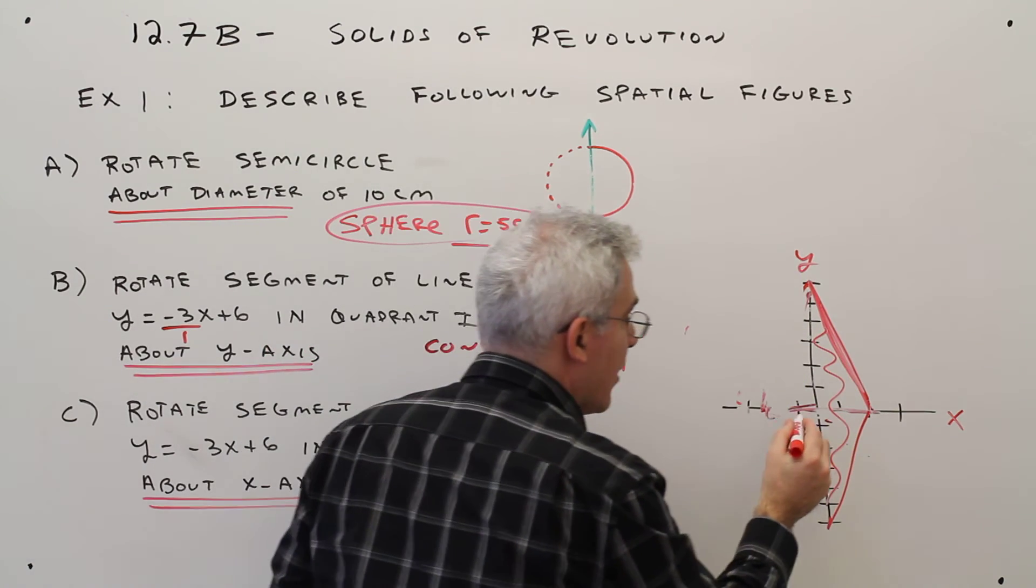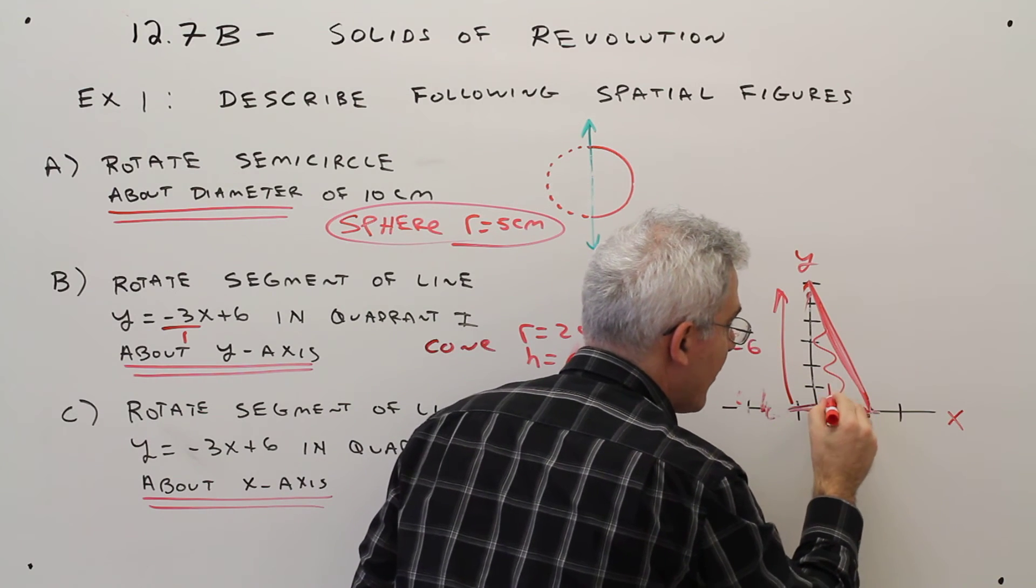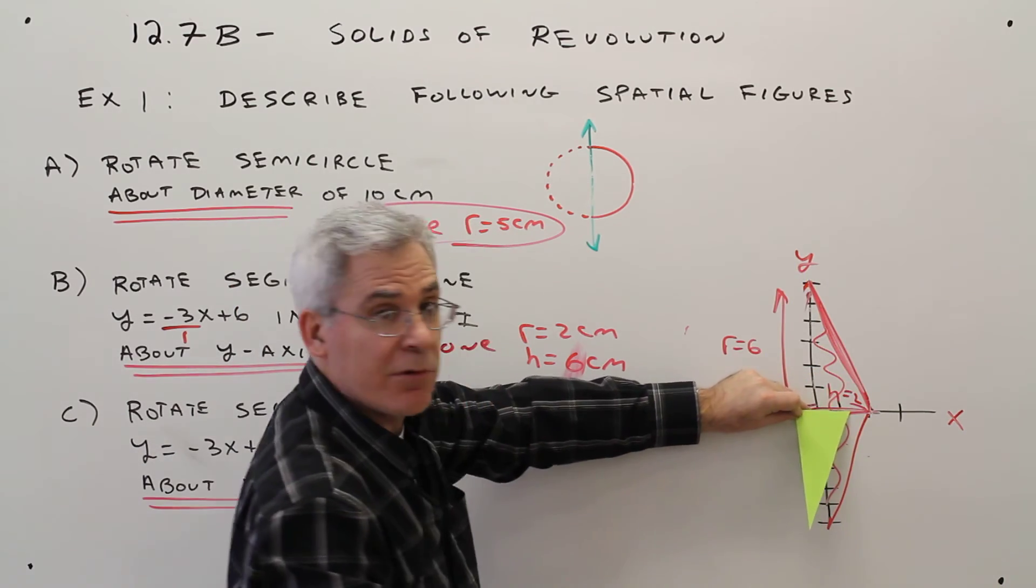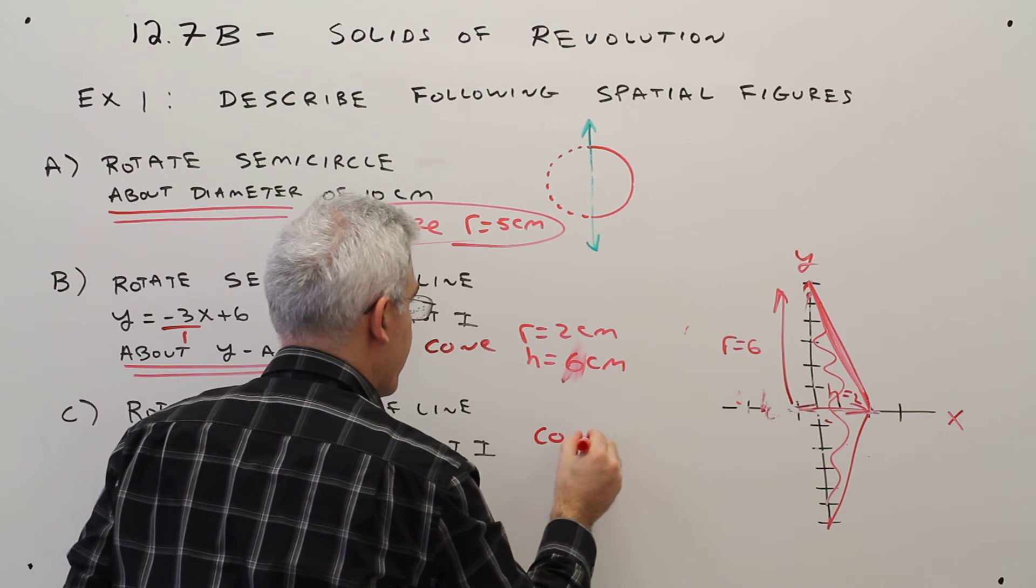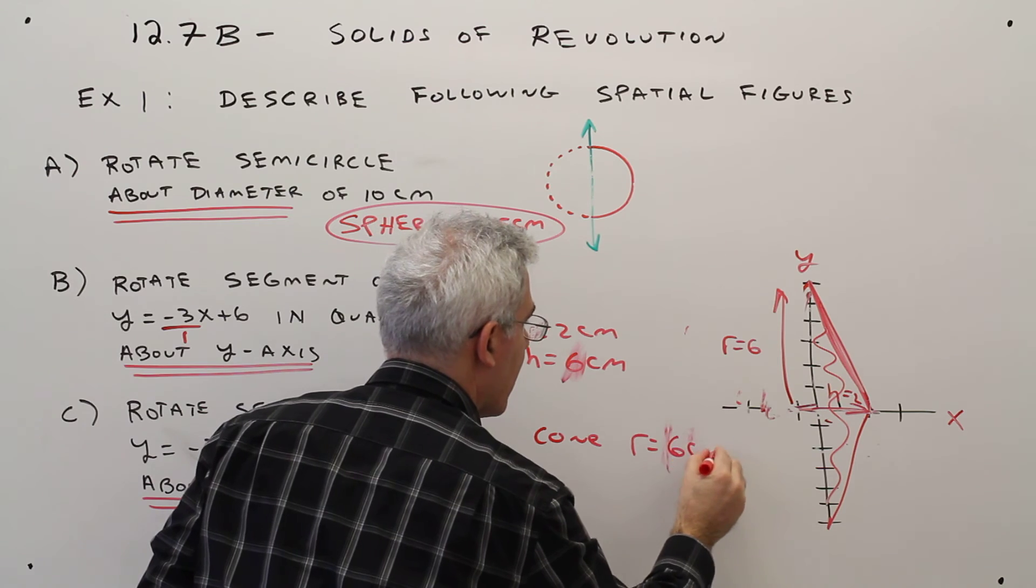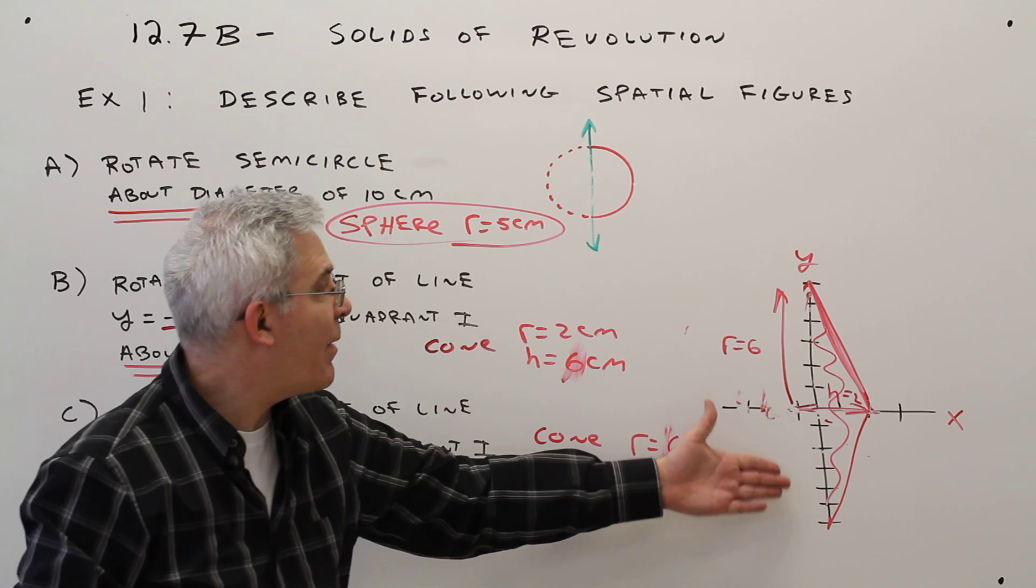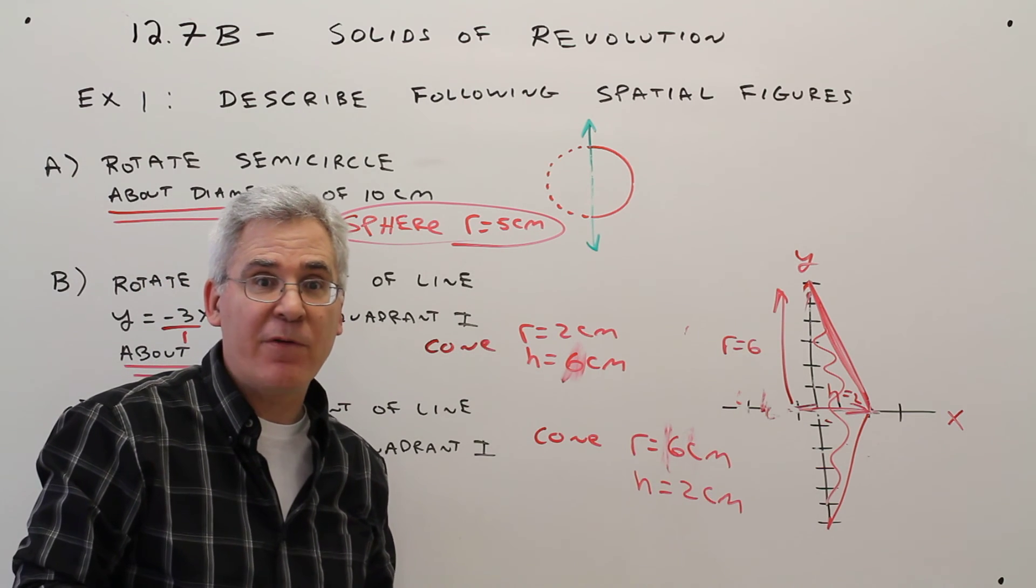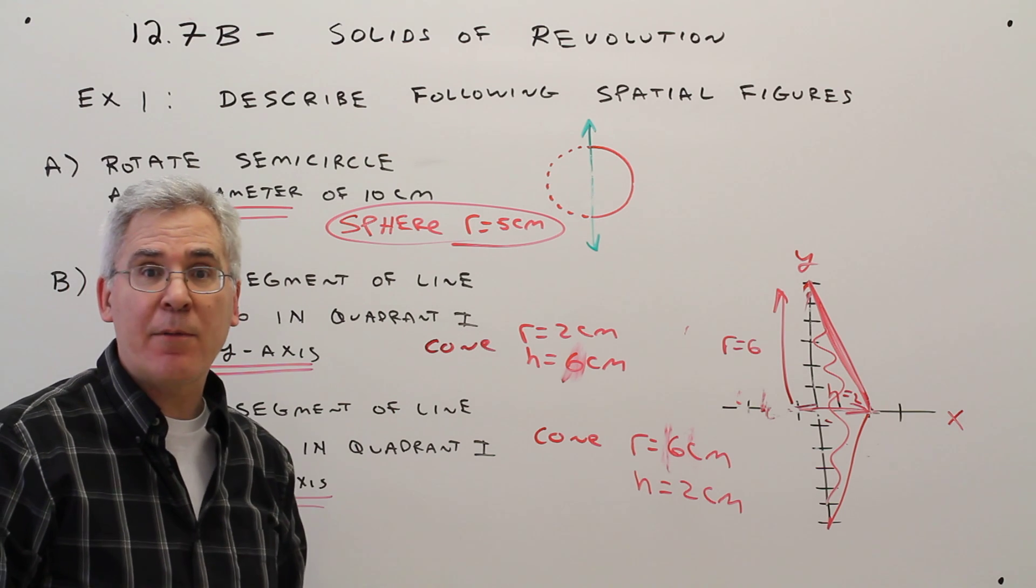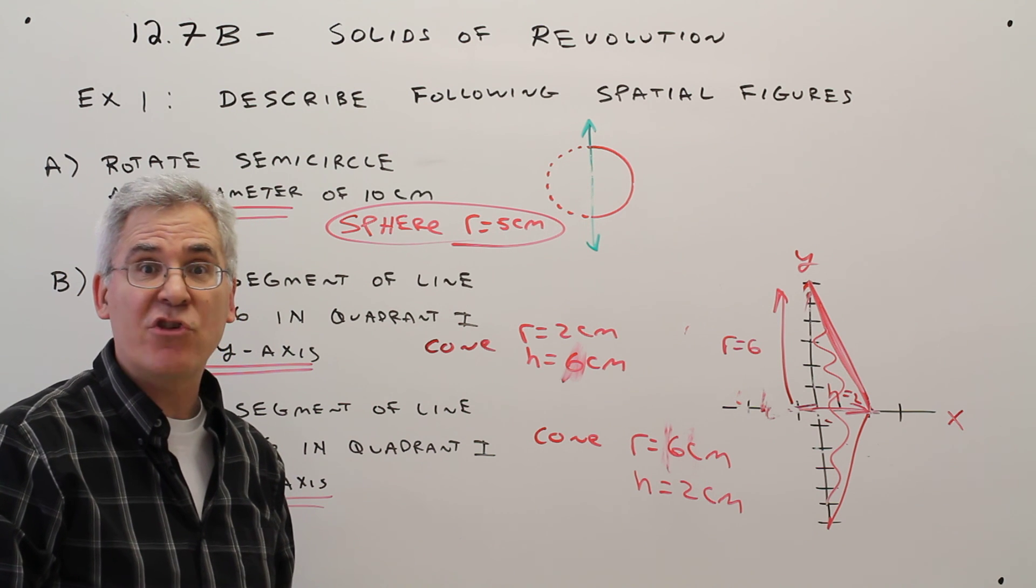However, this time, this is the radius of the cone. And this is the height of the cone. So the radius is 6 units. And the height of the cone is 2 units. So the radius is 6 centimeters. And the height is 2 centimeters. And again, I think by drawing that reflection can really help you visualize the problem better. So there you have it. How to describe the spatial figures obtained by rotating some plain geometric figures.